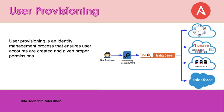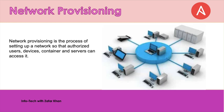Now, user provisioning. User provisioning is an identity management process that ensures user accounts are created and given the necessary permissions to access particular servers. Next is network provisioning. Network provisioning is the process of setting up a network so that authorized users, devices, containers, and servers can access it.